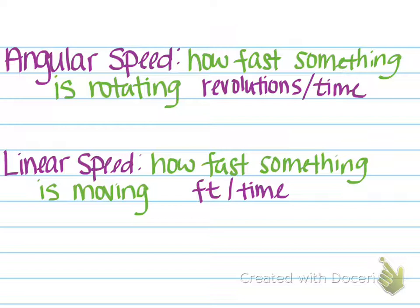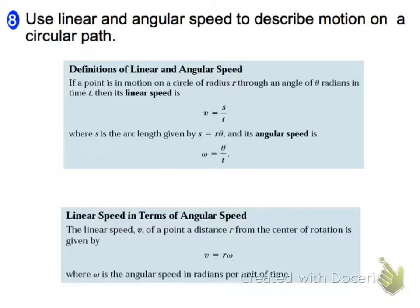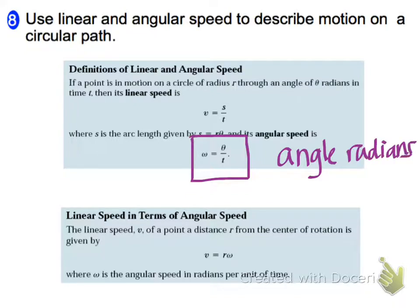Now for sake of our formulas here, in order to determine angular speed, let's go back and look now at the previous slide. Our angular speed is going to be our theta divided by time. Now theta has to be in radians. So it's going to be our angle in radians over time. And that's going to be our angular speed.